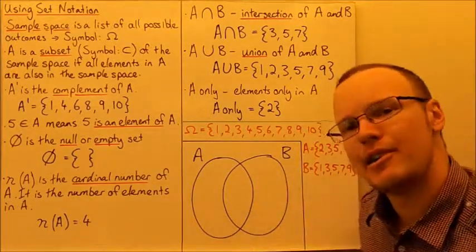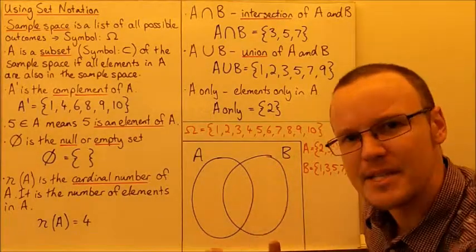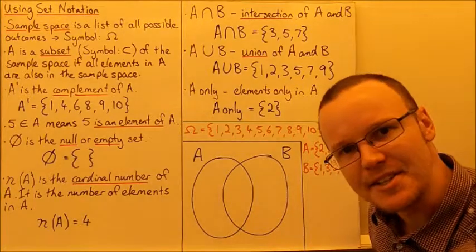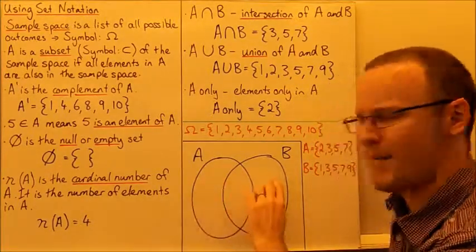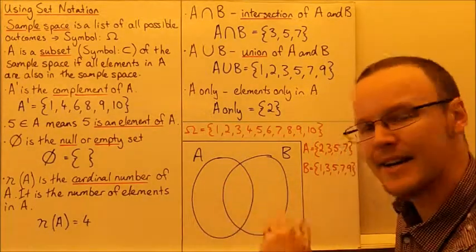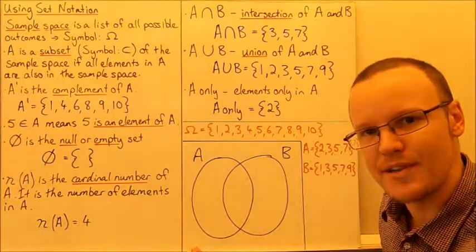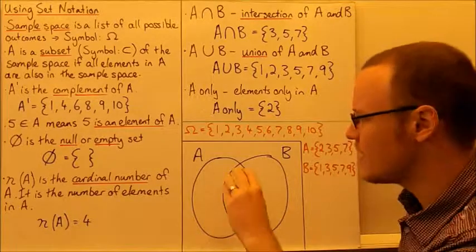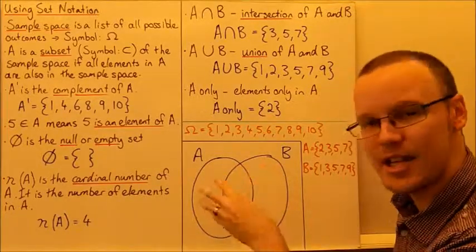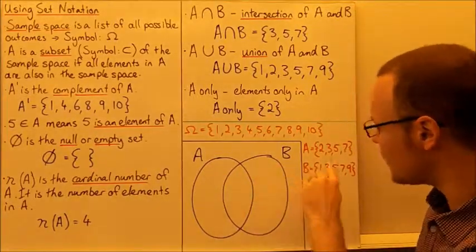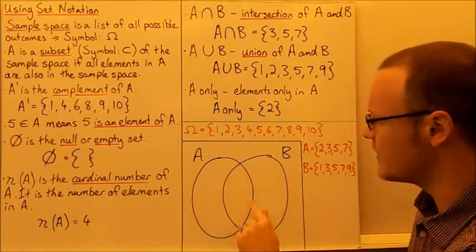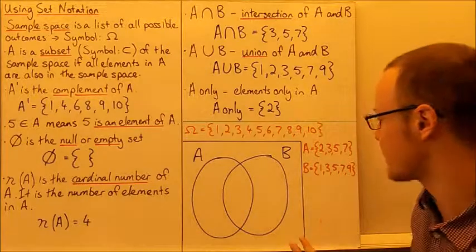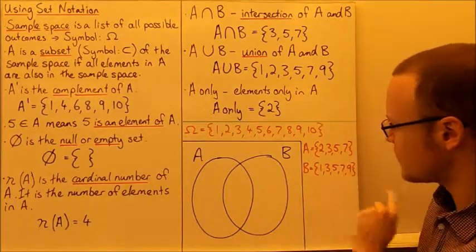When we're doing a Venn diagram, it's most useful to see how many elements are intersecting, how many are only in A, how many are only in B, and how many are in neither. We use Venn diagrams to show just the cardinal number of what is in each component of each set. The intersection of A and B has 3 elements: 3, 5, and 7.